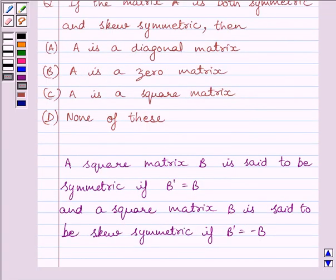First of all let us understand that a square matrix B is said to be symmetric if B transpose is equal to B. That is, the transpose of a matrix is equal to itself. And a square matrix B is said to be skew symmetric if B transpose is equal to minus B. That is, transpose of a matrix is equal to negative of itself. This is the key idea to solve the given question.